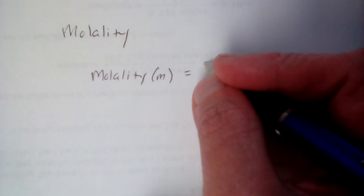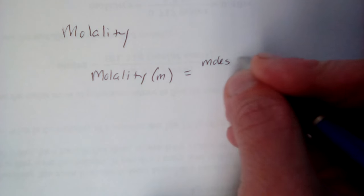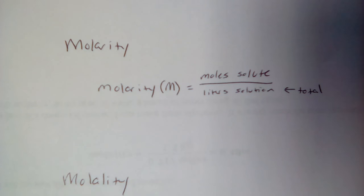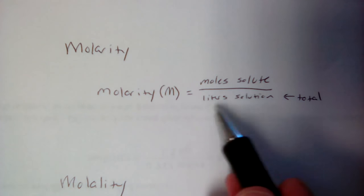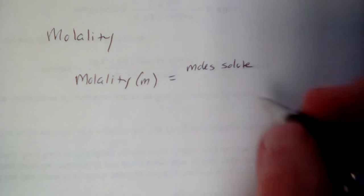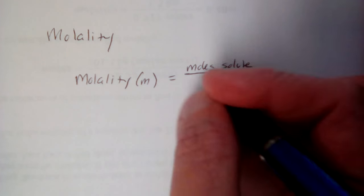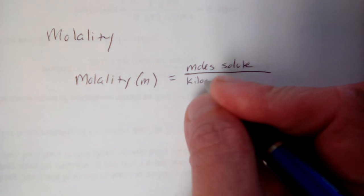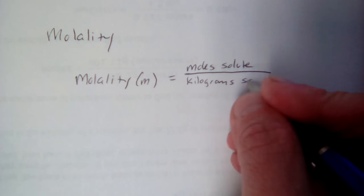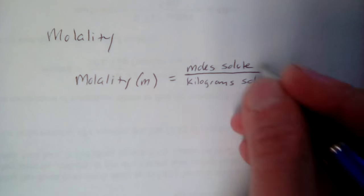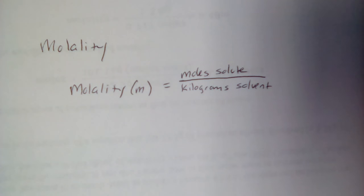We're still going to have moles of solute, just like we did with the molarity equation. But this time, instead of putting it over liters of solution, the total, we're going to put it over kilograms of solvent. It's the two parts this time. So the whole is not even brought up in here.